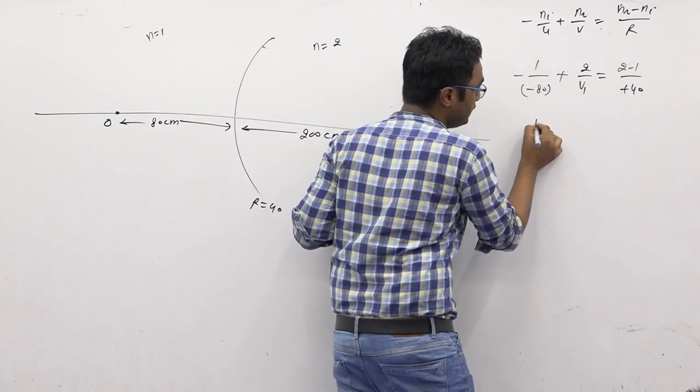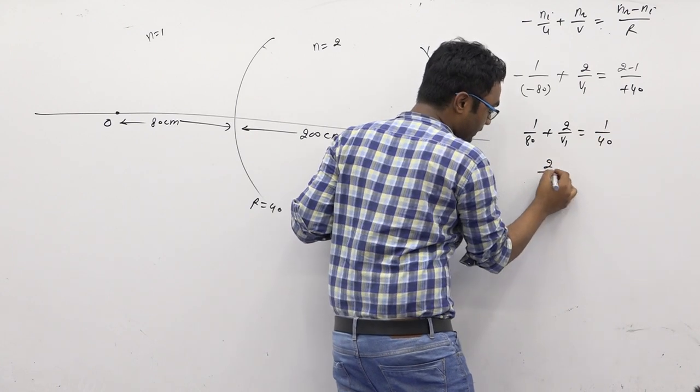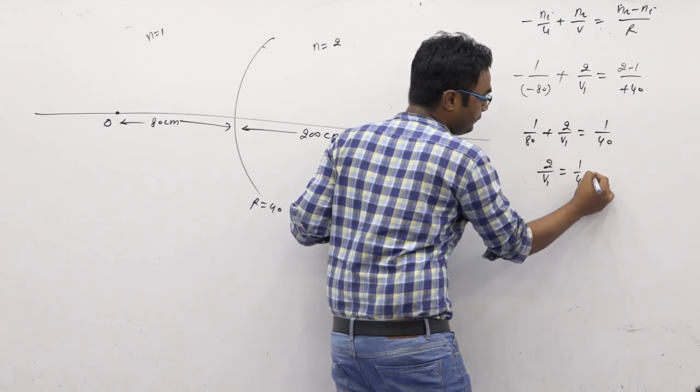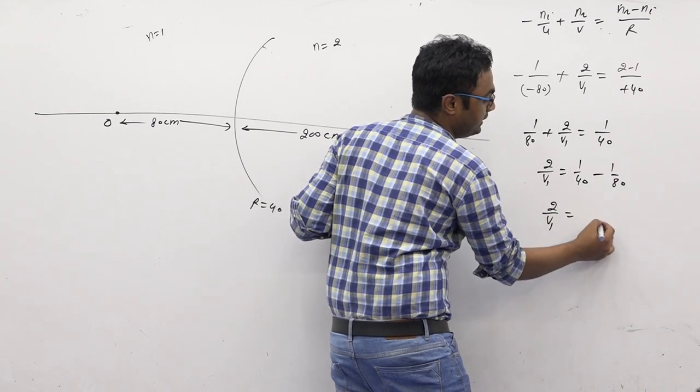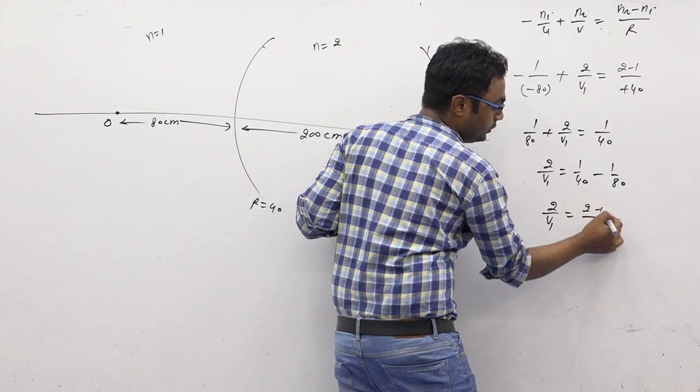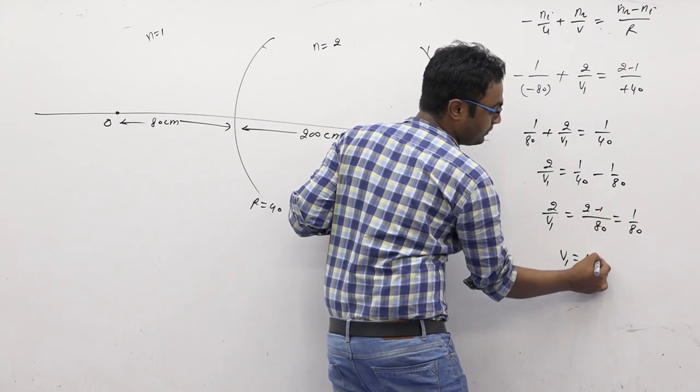Now solve this further. You get 1 by 80 plus 2 by v_1 equals 1 by 40. So 2 by v_1 value is 1 by 40 minus 1 by 80. Taking LCM, this becomes 2 minus 1, which equals 1 by 80. So v_1 value is 160.